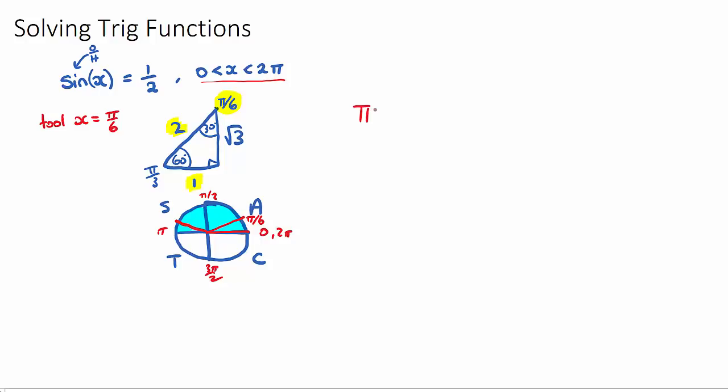And you might need to do some fraction work there. π minus π/6. Make sure we know how to do this just by doing a simple common denominator. So this would be 6π/6 minus π/6, which is 5π/6.